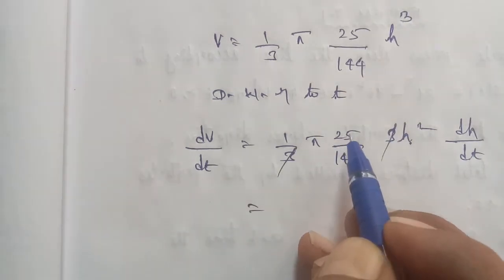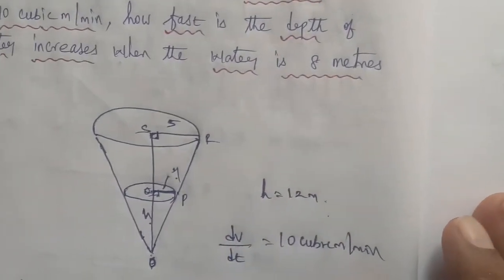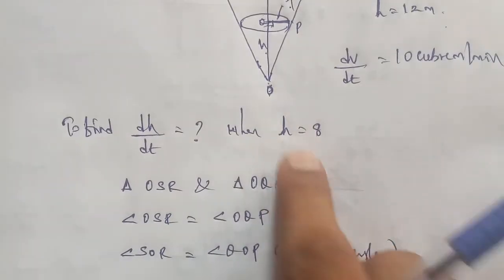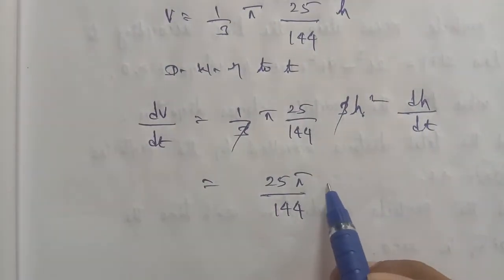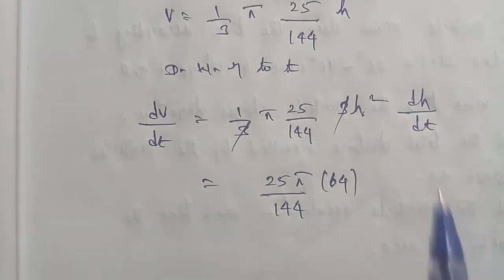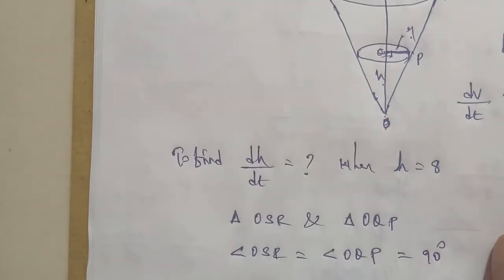Therefore remaining: 25 pi divided by 144, and h value, that is h is equal to 8. So therefore h value is 8, that is 8 square is 64, and next dh by dt, so dh by dt value we have to find.